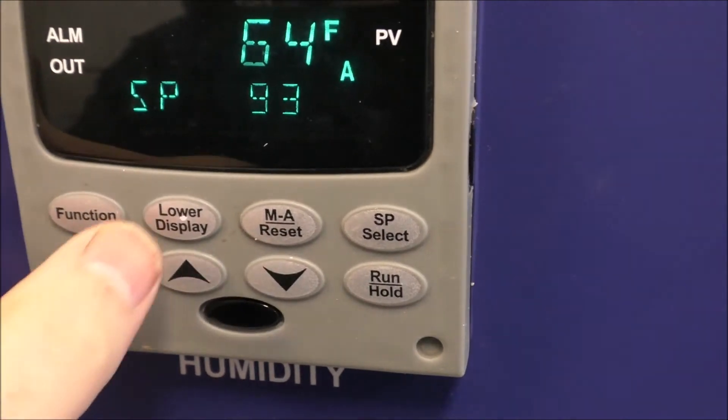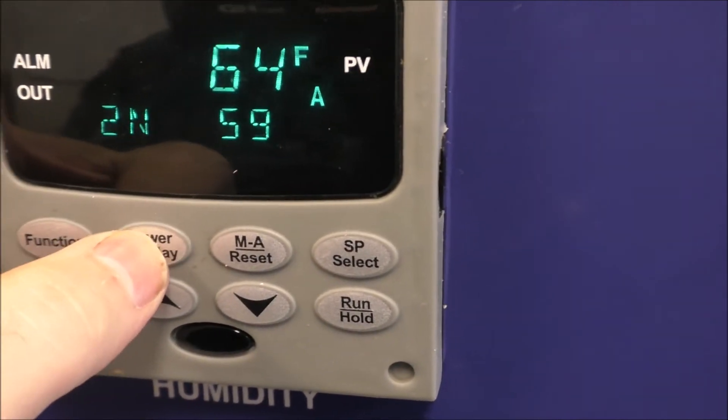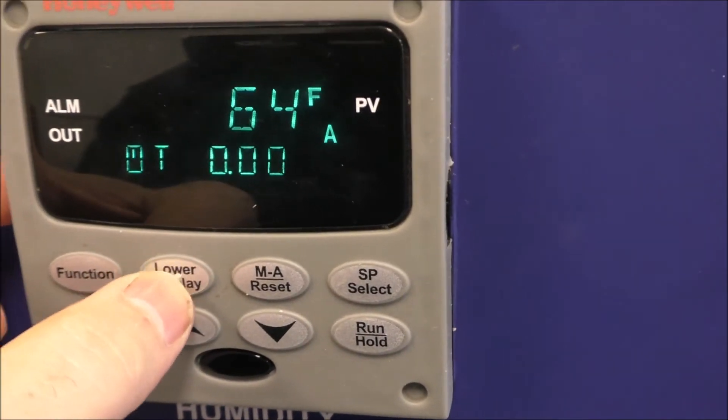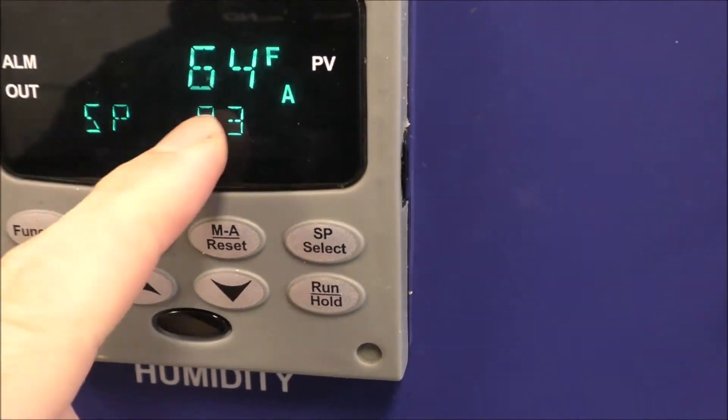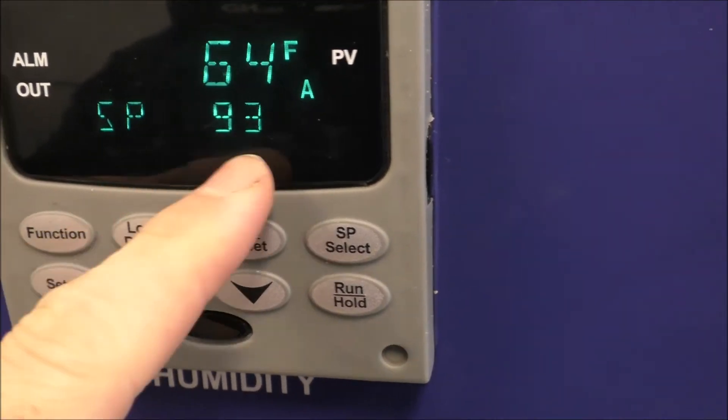If it doesn't say set point here, just push the lower display button until it says set point, and this would be the temperature you're running the dryer at.